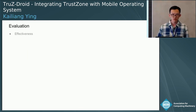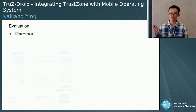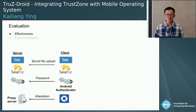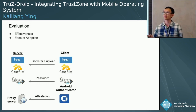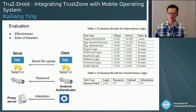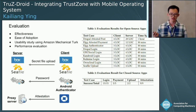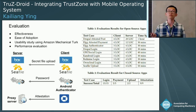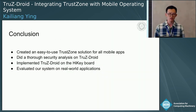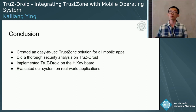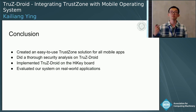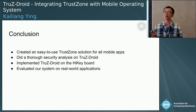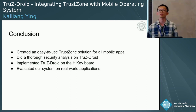We evaluated from four aspects: effectiveness, where we developed several use cases; ease of adoption, where we applied our solution on both open-source and closed applications; a usability study on Mechanical Turk; and performance analysis. The results are quite positive and the details can be found in the paper. In conclusion, we created an easy-to-use TrustZone solution for all mobile applications, analyzed our trust-driven designs, implemented this on real applications, and evaluated the system. Thanks — I'll be happy to take questions.